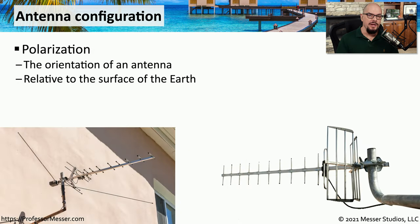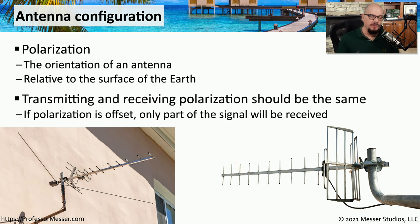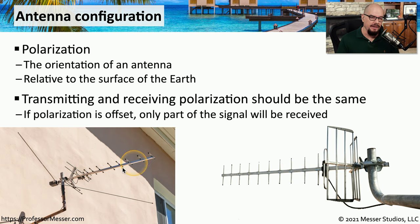Another important configuration for directional antennas is polarization — the orientation of the antenna relative to the Earth. You can have horizontally polarized antennas that are flat to the Earth, or vertically polarized antennas. If you're setting up two antennas, you want to be sure that both the transmitter and the receiver have exactly the same polarization. If they differ — one horizontal, one vertical — only a portion of the signal will be received.